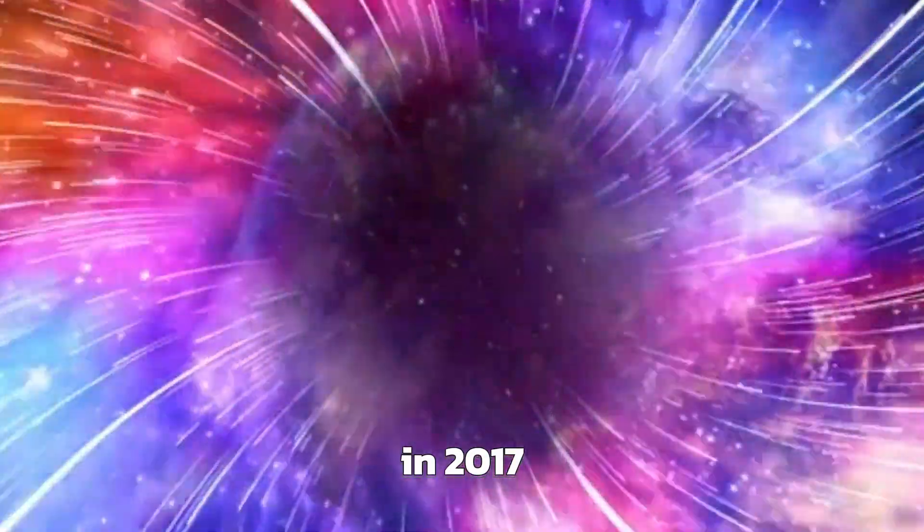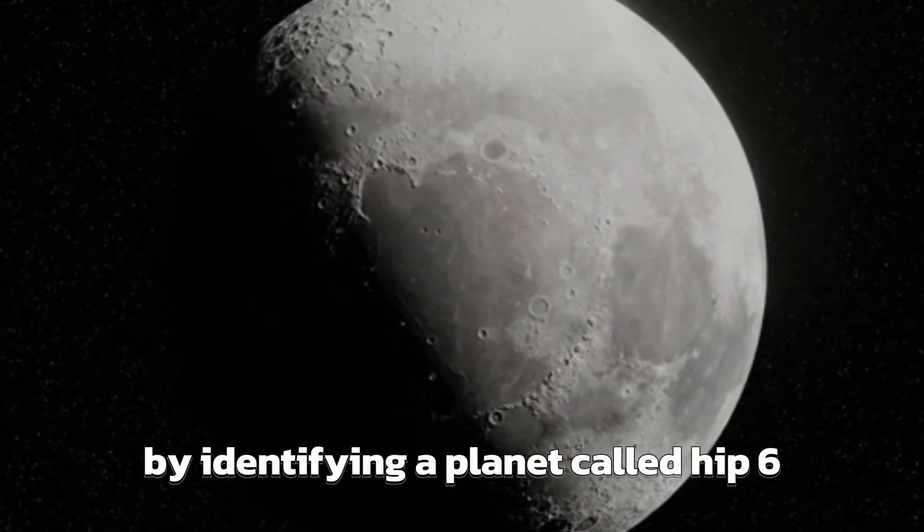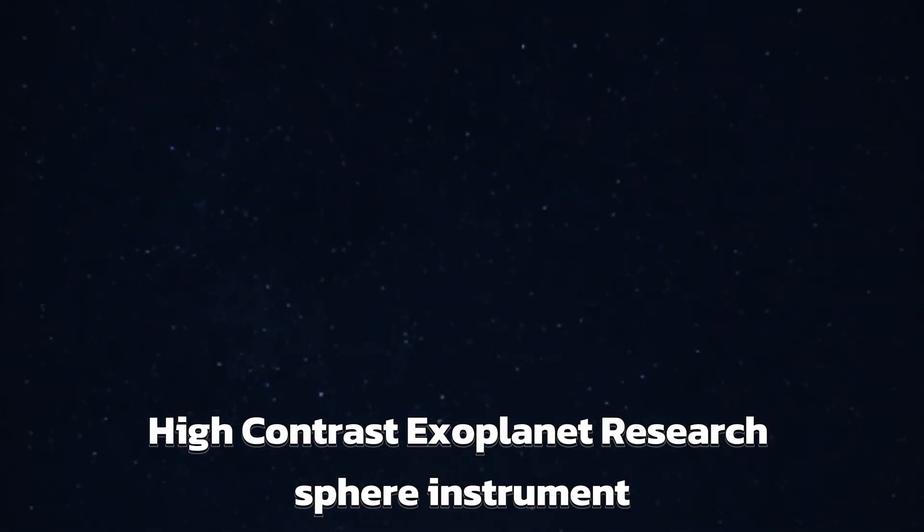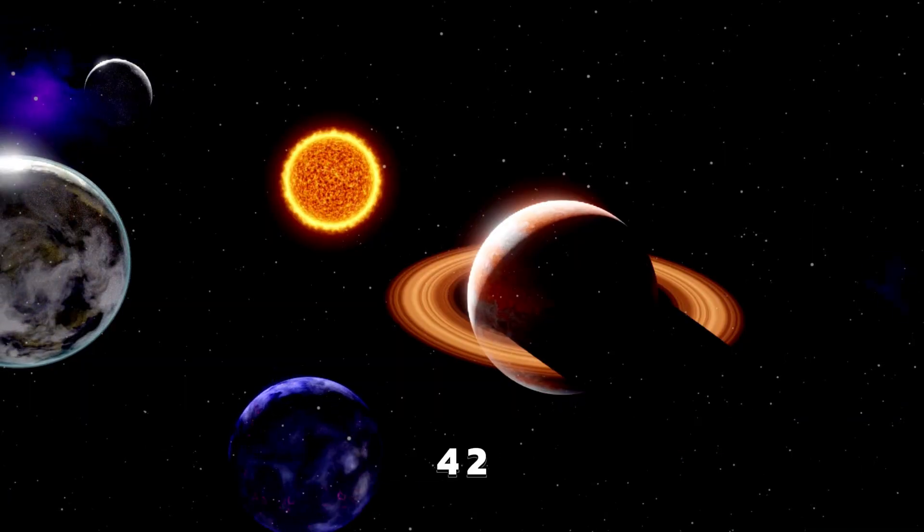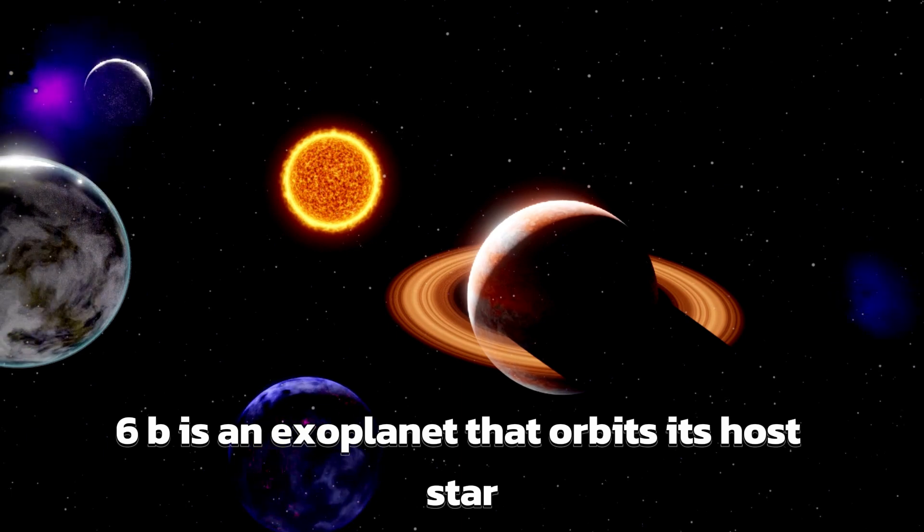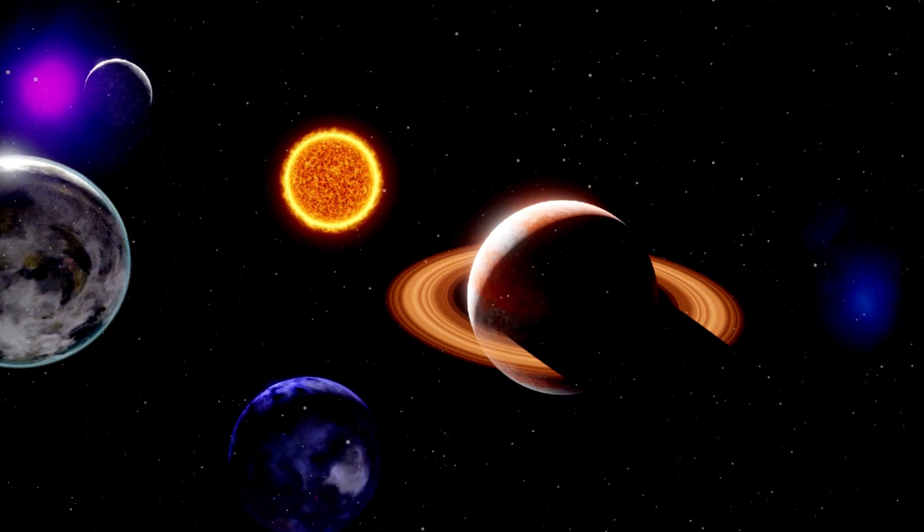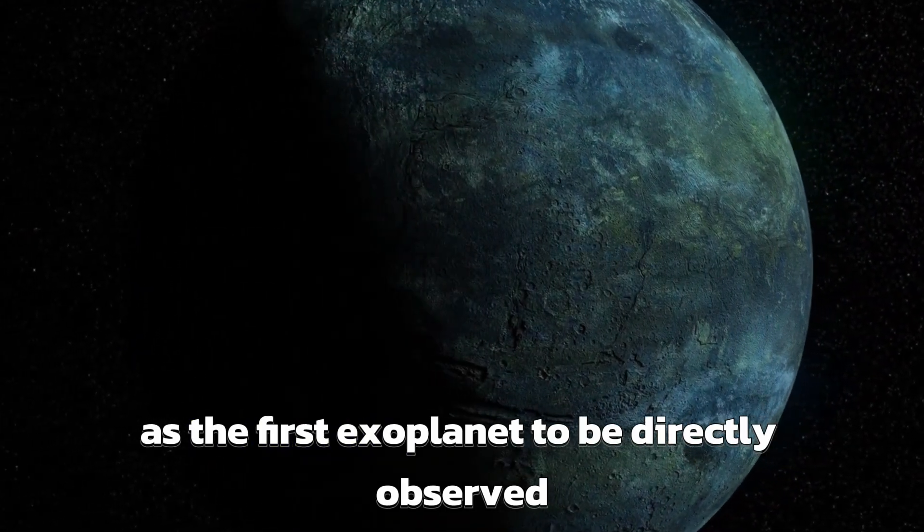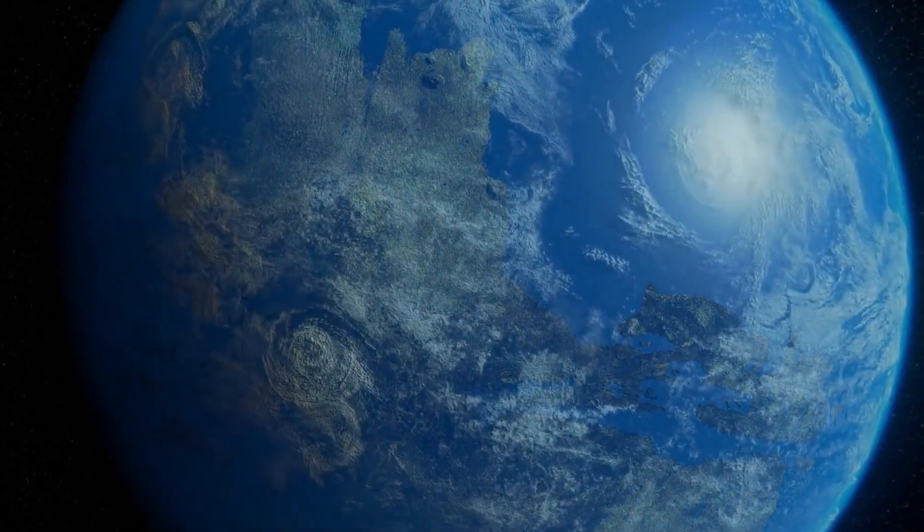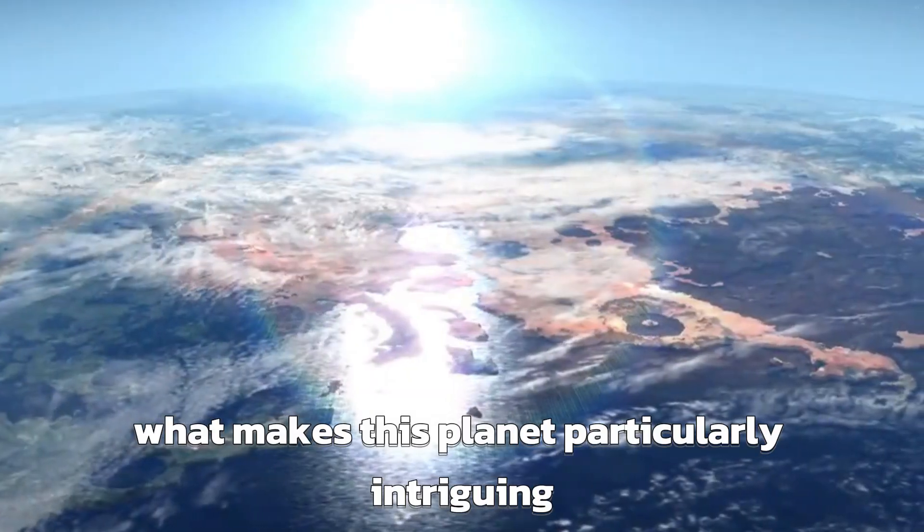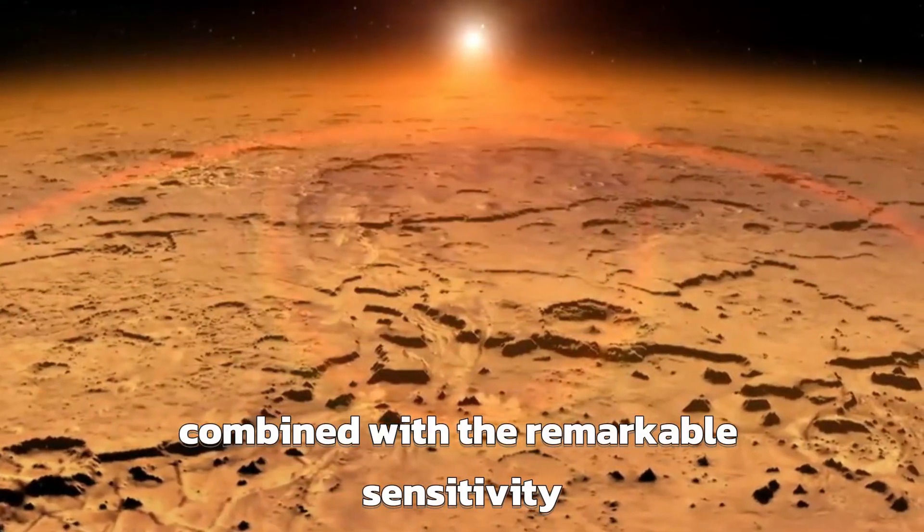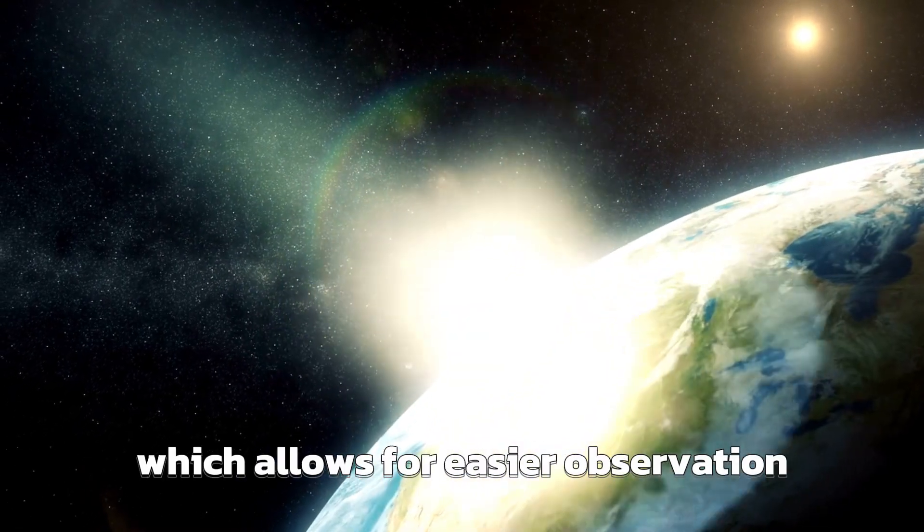In 2017, the SPHERE consortium made a significant discovery by identifying a planet called HIP-65426b using the Spectropolarimetric High Contrast Exoplanet Research SPHERE instrument. HIP-65426b is an exoplanet that orbits its host star, HIP-65426. In September 2022, it gained further attention as the first exoplanet to be directly observed by the James Webb Space Telescope. What makes this planet particularly intriguing is its unique characteristics, combined with the remarkable sensitivity of the James Webb Telescope, which allows for easier observation.